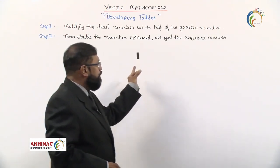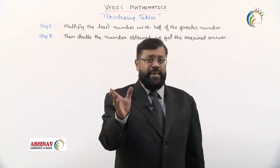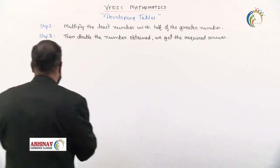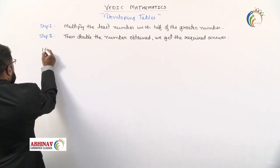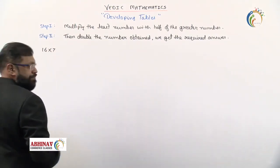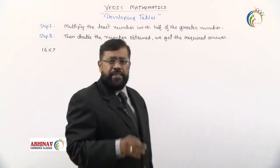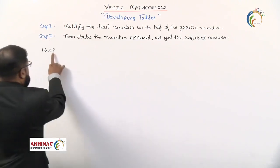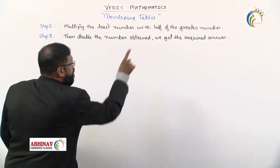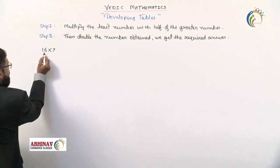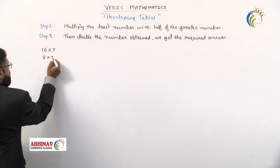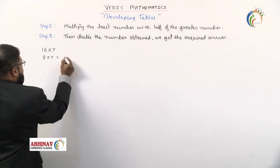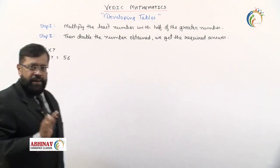Step 1: multiply the least number with half of the greater number. Say for example, we have 16 into 7. What is step 1? We need to multiply the least number, 7, with half of the greater number. Which is the greater number? 16. We'll half it. So it becomes 8 into 7. 8 into 7, what we get is 56.